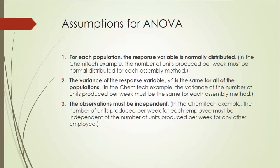Here are some key assumptions for ANOVA analysis. First, for each population, the response variable is normally distributed. In our Chemitech example, the number of units produced per week must be normally distributed for each assembly method. Second, the variance of the response variable sigma is the same for all the populations — the variance of units produced per week must be the same for each assembly method. Third, the observations must be independent: the number of units produced per week for each employee must be independent of the number produced by any other employee.